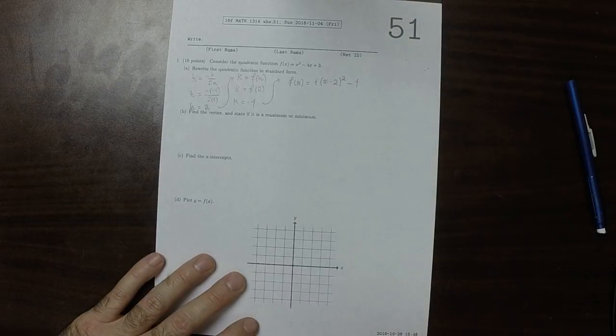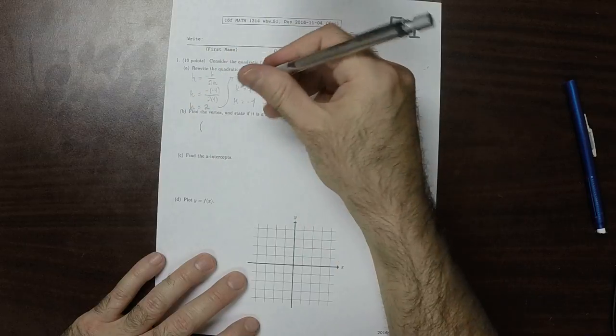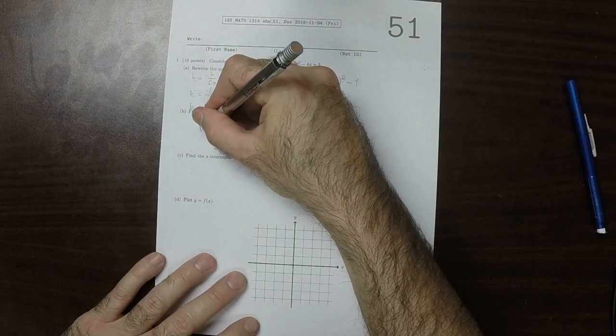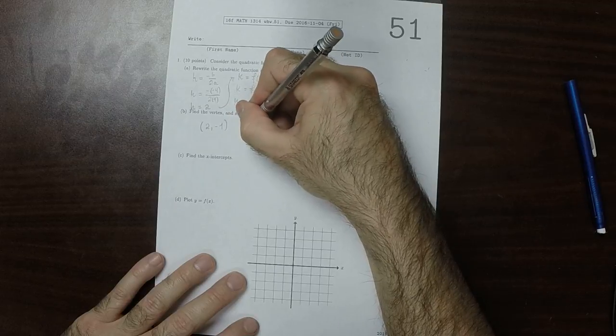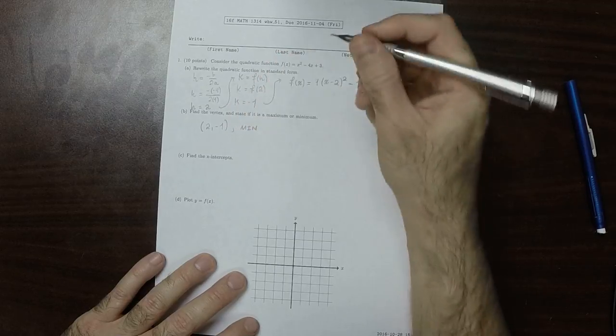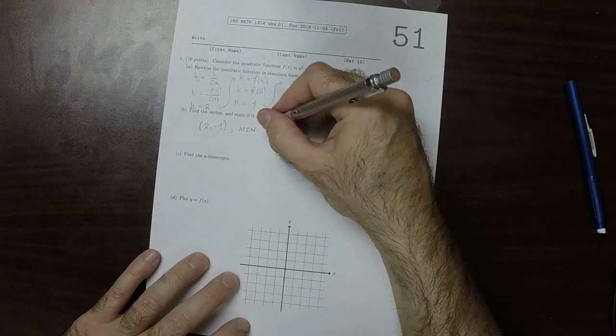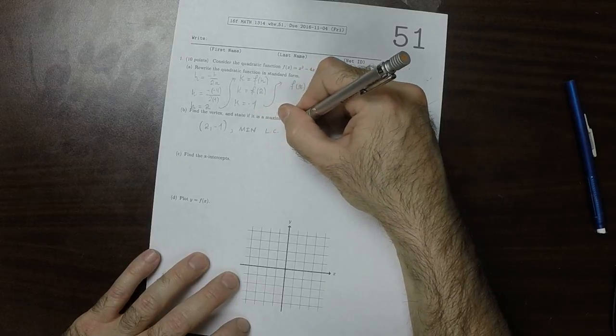Find the vertex. Well, we just did that. The vertex is at 2, negative 1, and it is a minimum because the leading coefficient is positive.